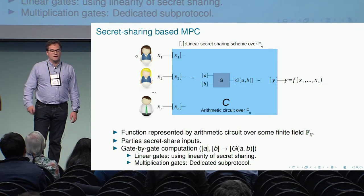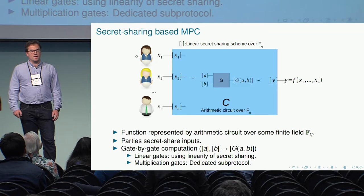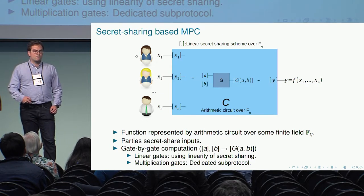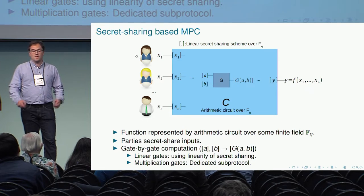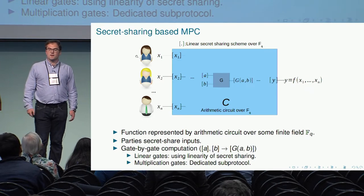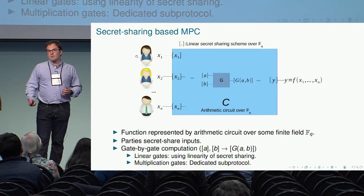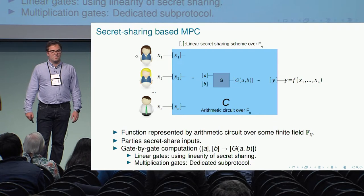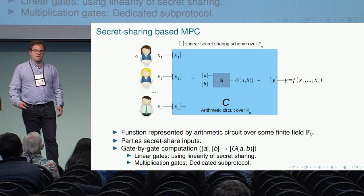The parties are able to compute the sharing of the output given the sharing of the inputs in each gate, and then reconstruct the output of the circuit. When the gates are linear, this is very easy because the parties can compute locally using the linearity of the secret sharing scheme. When it is multiplicative, it becomes a little bit more complicated, depending on which protocol you are using.